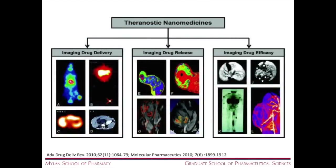The theme of our discussion today is Theranostics. Theranostics stands for therapeutic and diagnostics combined into a single entity, and the focal point of this discussion and much of recent research is nanomedicines. Why would we formulate a theranostic? The goal is to understand drug delivery so we can image drug delivery in live organisms, image drug release, and image drug efficacy. The focus of our research is: can we use nanomedicines to image drug delivery but also understand the efficacy of that drug delivery?